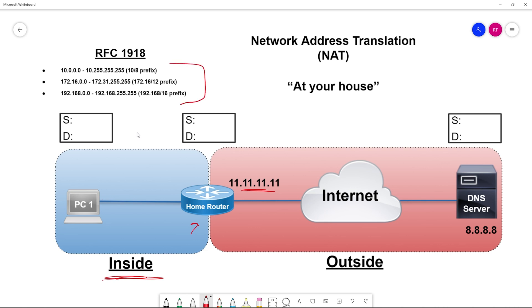These private IP address ranges are defined in RFC 1918. Let's say our internal network at home has a block of IPs from the 10.10.10.0/24 range, so anything inside my home is assigned something from this range. PC1 has an IP address of .1. Let's also say that PC1 wants to ping 8.8.8.8, which is a DNS server out on the internet — specifically the IP address of Google's public DNS server. When PC1 pings 8.8.8.8, it builds a packet with a source IP address of 10.10.10.1 and a destination IP address of 8.8.8.8.